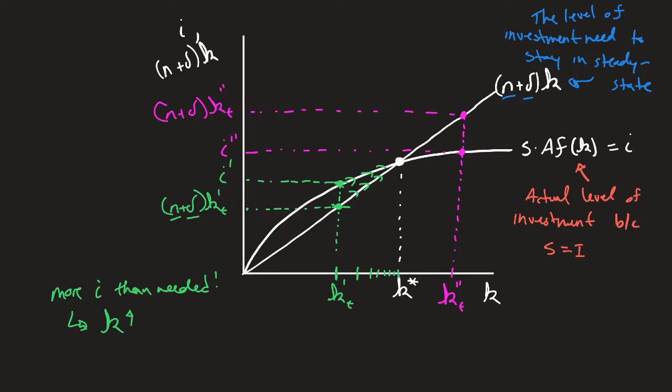And so what we see here, there's not enough investment. We need to have this amount up here. We only have this amount. So what does that mean? That means that we're going to not be able to replace all the depreciated capital, or we're not going to be able to give the new people as much capital. So my capital per worker is going to start to fall.